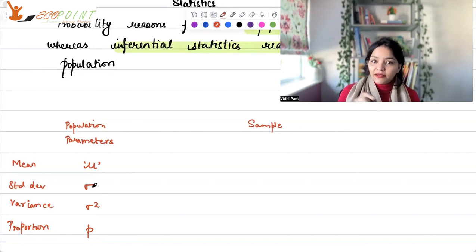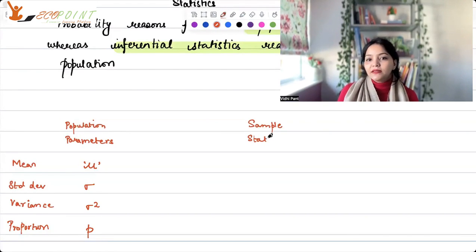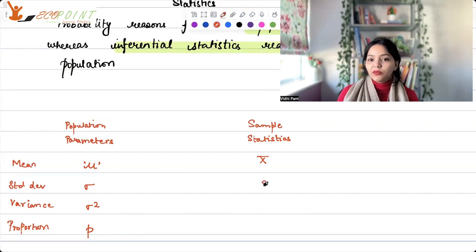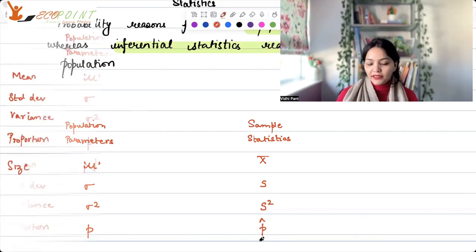The same characteristics for sample, they are called sample statistics. Mean for a sample would be denoted as x bar, standard deviation would be denoted as s, variance would be denoted as s square, and sample proportion is generally denoted as p hat.